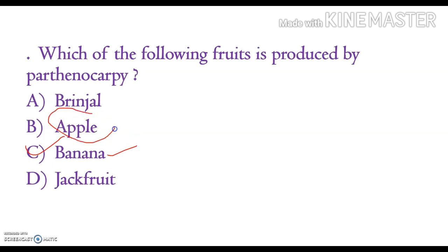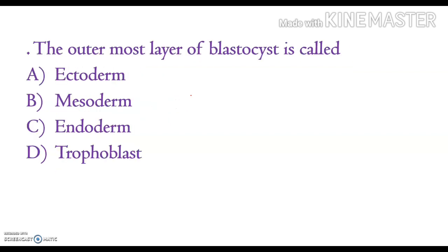A special thing about apple is that apple is a false fruit. Apple is a false fruit because the thalamus also contributes to fruit formation. Fruits in which the thalamus contributes to fruit formation are called false fruits. Strawberry is another example of a false fruit.